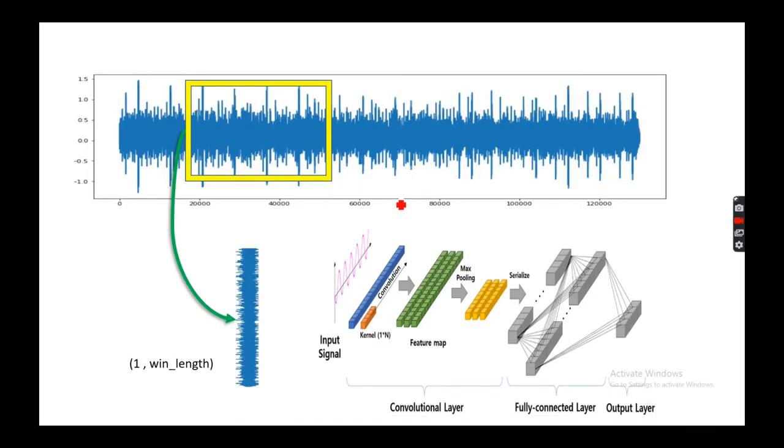Instead of just using the conventional multi-layer neural network, we are going to use a 1D convolutional neural network layer. This is how my signal will look like in an array format and these will be my kernels.